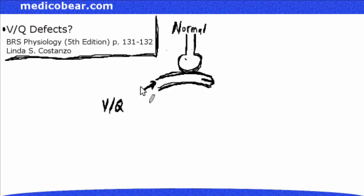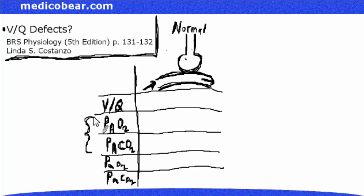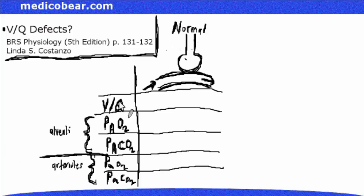What we're going to look at here is ventilation and perfusion. We'll also look at the partial pressure of oxygen and carbon dioxide in the alveoli, and the partial pressures of oxygen and carbon dioxide in the arterials. The capital A refers to the alveoli, the little a refers to the arterials. This is VQ — ventilation over perfusion.